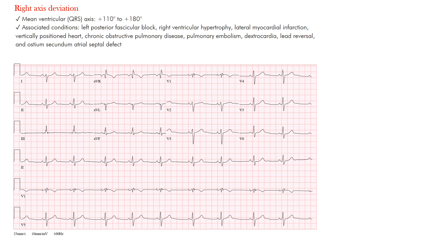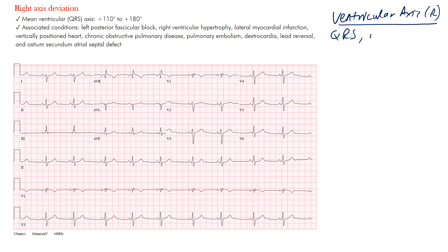Right axis deviation — determining axis is always difficult for beginners, so let's try to simplify it. When we talk about axis deviation, we're talking about the ventricular axis. On the EKG you may see it as the R axis, and we are looking at the QRS complexes. There's also an axis for the T wave, ST segment, P wave, and so forth for pretty much all intervals, segments, and waves on the EKG.